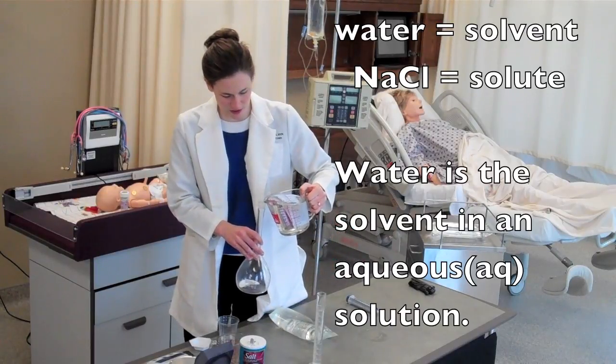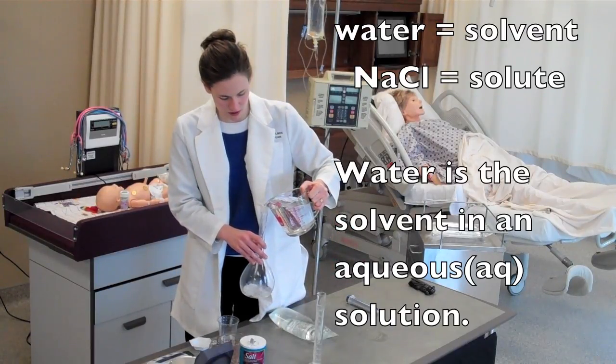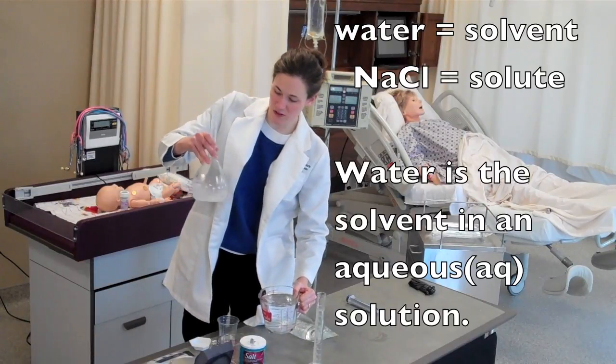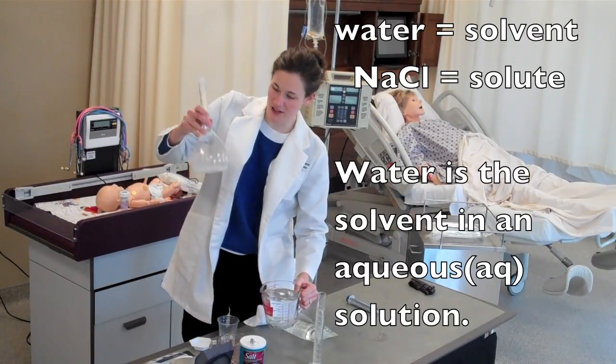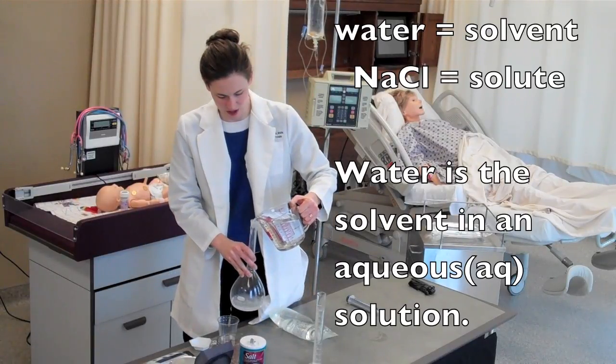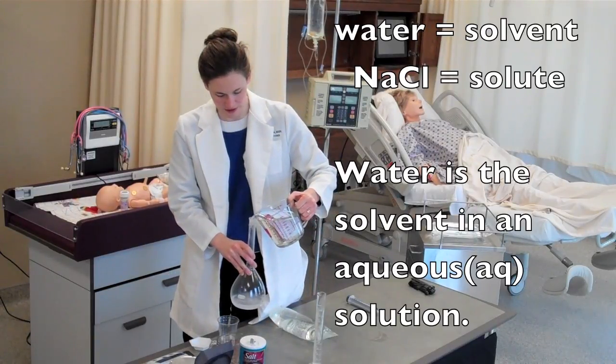Water is our solvent. Sodium chloride, our solute. And I swirl to get all that sodium chloride dissolved. Then I'm going to continue adding the solvent until I have exactly 1 liter of solution.